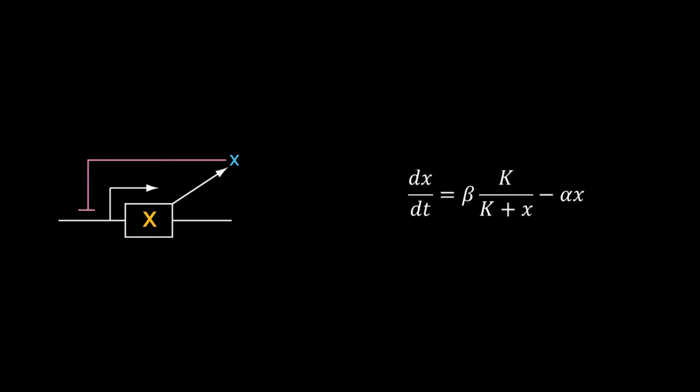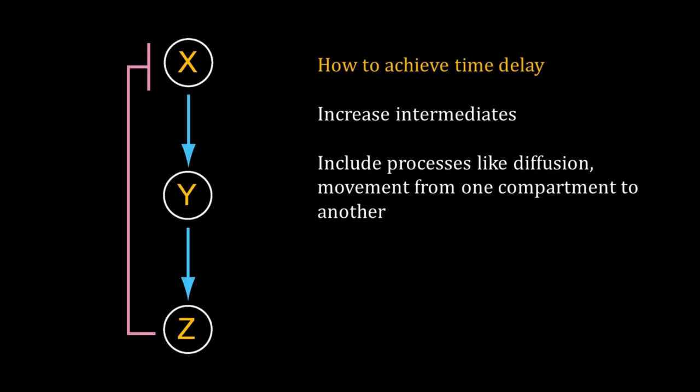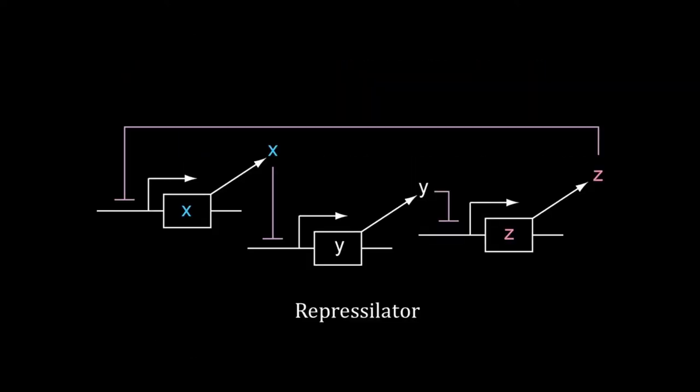And they are balancing each other and taking us to a steady state. You can break that balance by introducing a time delay between these two opposing processes. One way to achieve the time delay is to include intermediate molecules. So here we have a negative feedback with three molecules: X inhibits Y, Y inhibits Z, Z inhibits expression of X.